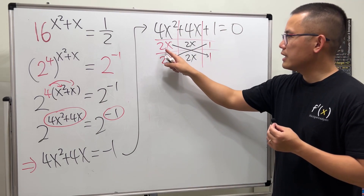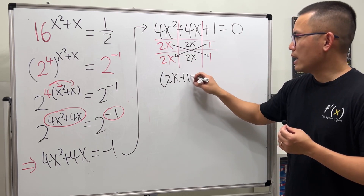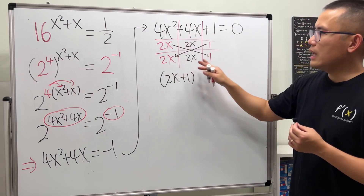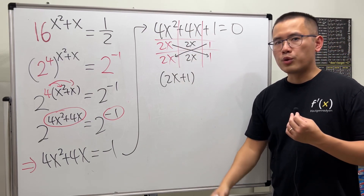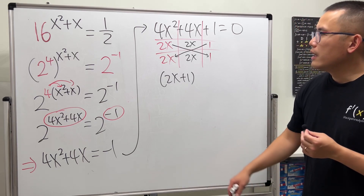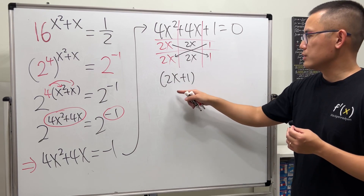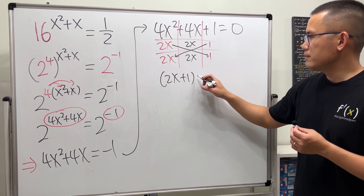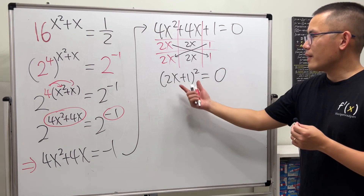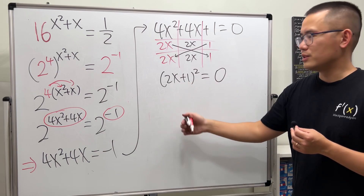So this factors to (2x + 1)(2x + 1). If you want to see how tic-tac-toe factoring works, I'll provide another tutorial in the description. The other factor is also 2x + 1, so we can write this as (2x + 1) squared equals 0.